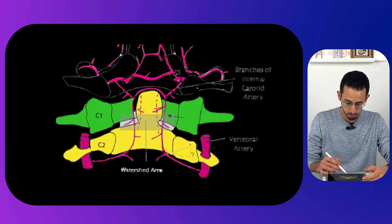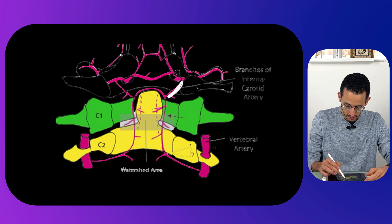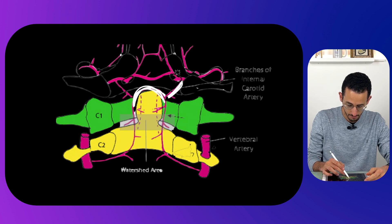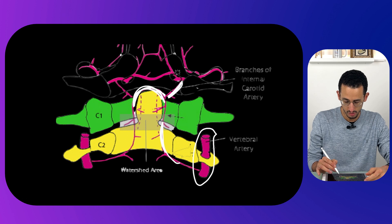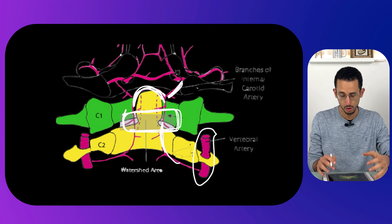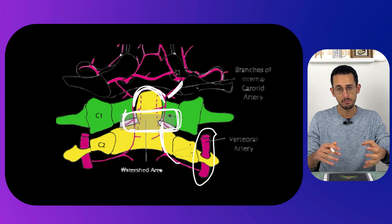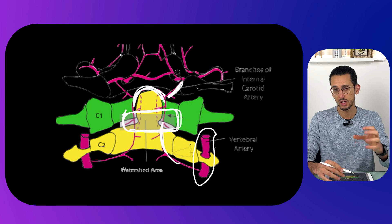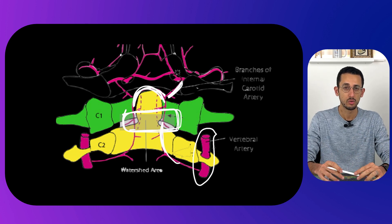The reason type 2 specifically has a higher rate of non-union compared to types 1 and 3 comes down to the vascular supply of the odontoid. Branches from the internal carotid artery supply the tip, and branches from the vertebral artery supply the base. This creates a watershed or gray zone in the middle that is not properly supplied by blood — which correlates exactly with the site of a type 2 fracture.